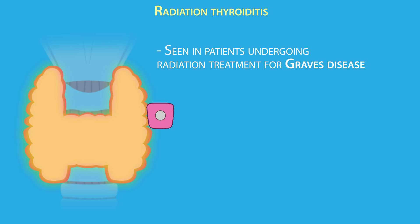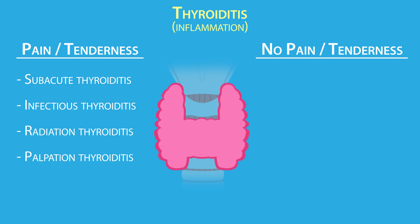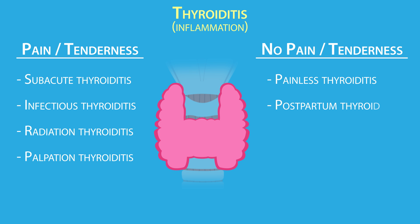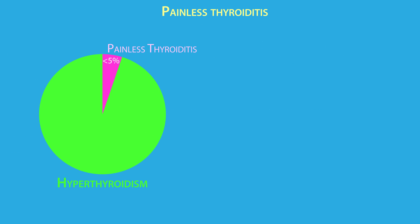Radiation thyroiditis is occasionally seen in patients with Graves' disease undergoing radiation treatment, which damages follicular cells and leads to increased release of T3 and T4. Likewise, trauma, neck surgery, or even excessive palpation of the thyroid gland can cause palpation or trauma-induced thyroiditis.